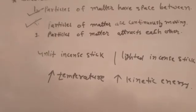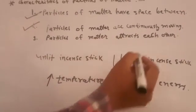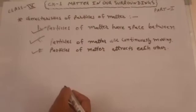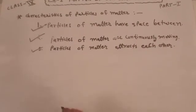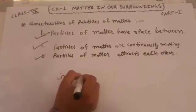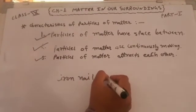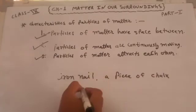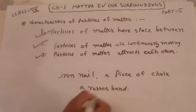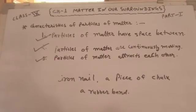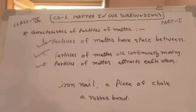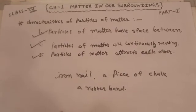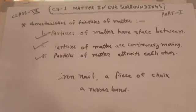And third characteristic of particles of matter is particles of matter attract each other. We can prove it by the activity. We take an iron nail, a piece of chalk, and a rubber band, and we try to break them by hammering, cutting or stretching. After this we can feel the particles are held together with greater force and we can see the strength of this force of attraction varies from one kind of matter to another.